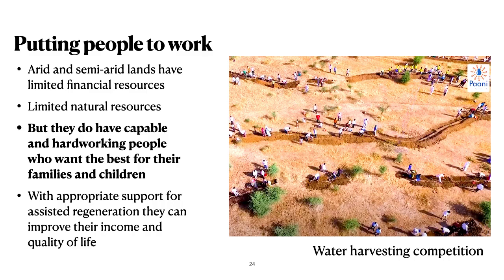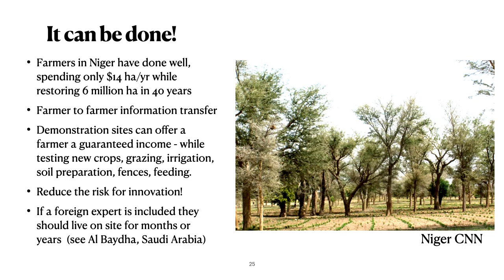The biggest resource of these drylands is the people. Putting them to use, helping them understand what can and can't be done and what might be helpful, can be very important. They may have limited natural resources, but many times they're willing to work hard, they learn quickly what helps, and they'll follow up with it over the years. With appropriate support for assisted regeneration, they can improve their income and their quality of life. Farmers in Niger have shown what can be done — studies showed they were spending only $14 per hectare per year to improve their management, and it restored over 6 million hectares in 40 years. The key to this was farmer-to-farmer information transfer, which is a critical issue in any efforts at better natural resource management. Experts in white shirts often have a difficult time connecting with farmers, despite their best intentions.